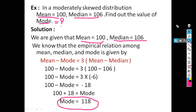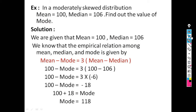In this way, if any two measures of central tendency are given — either mean and median, median and mode, or mean and mode — we can calculate the third measure using the empirical relation: Mean − Mode = 3 × (Mean − Median).